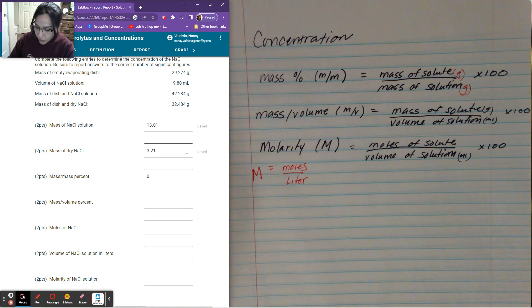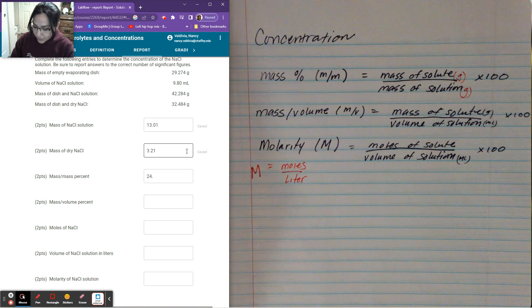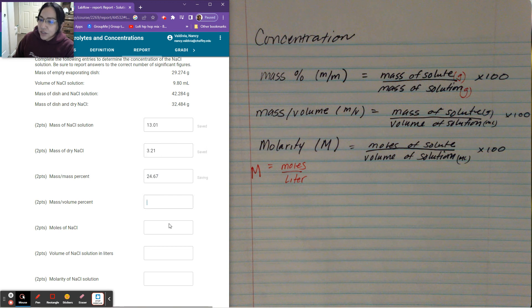And I'm going to divide those and I get zero point, oops, forgot one step. Divide them and multiply it by 100. I'm going to get 24.67 as that percent. So as you can see, these are actually quite easy.